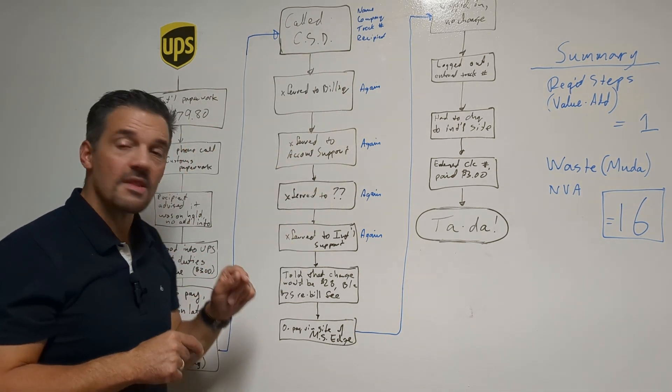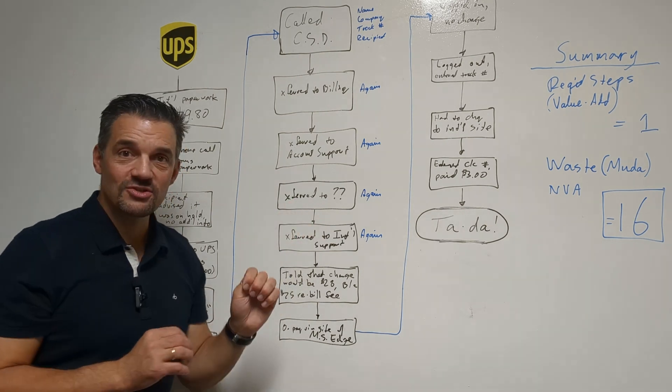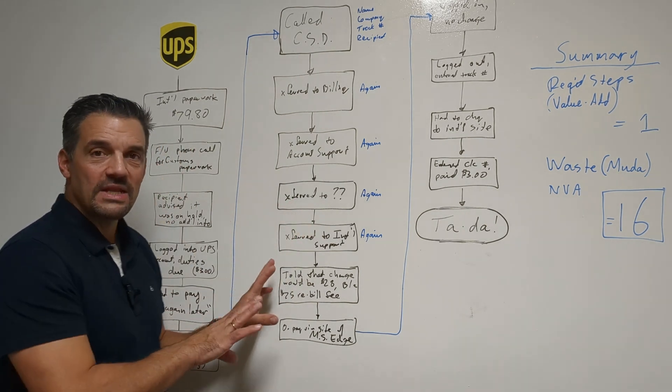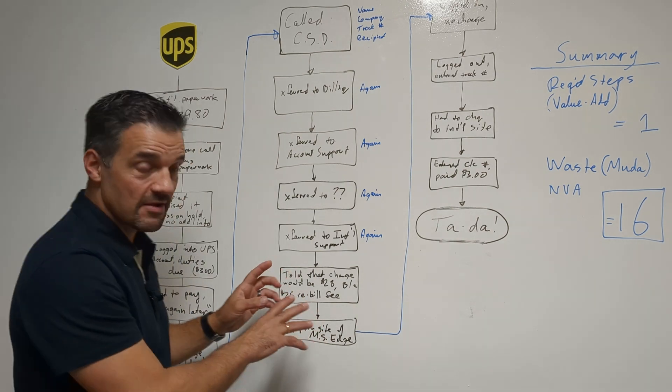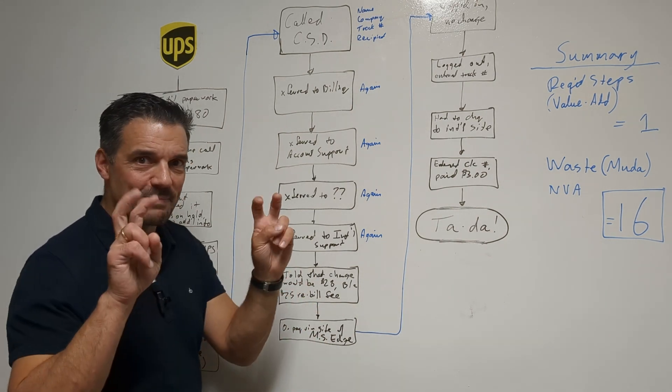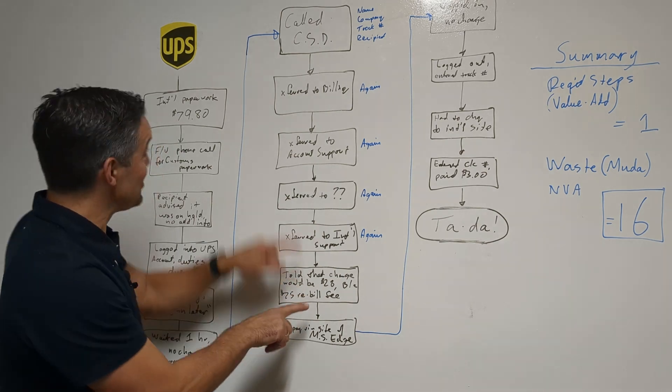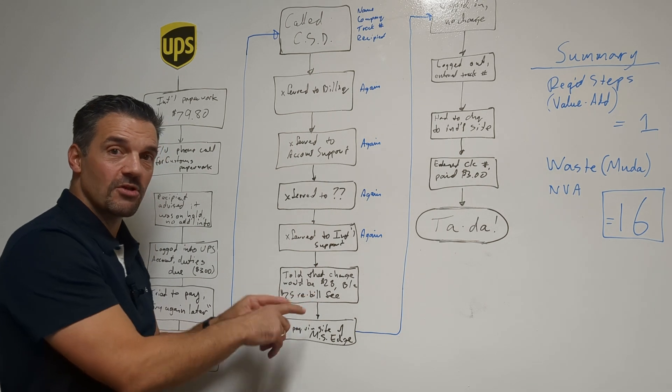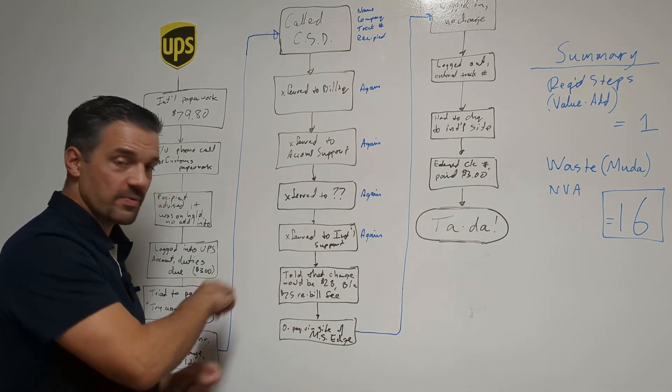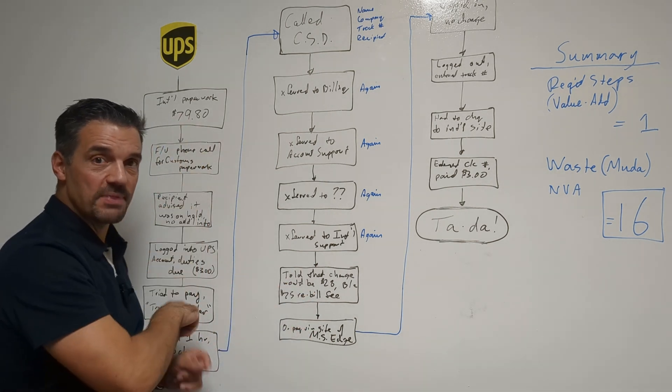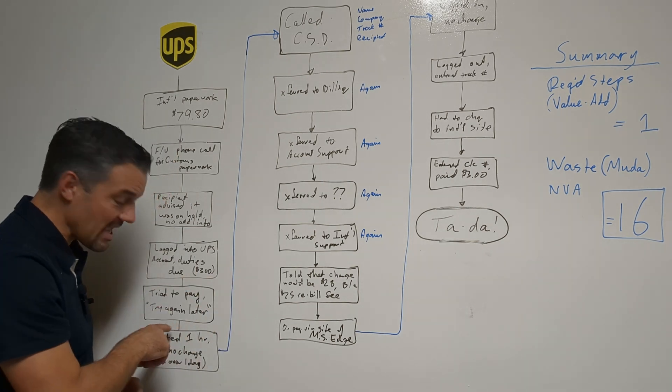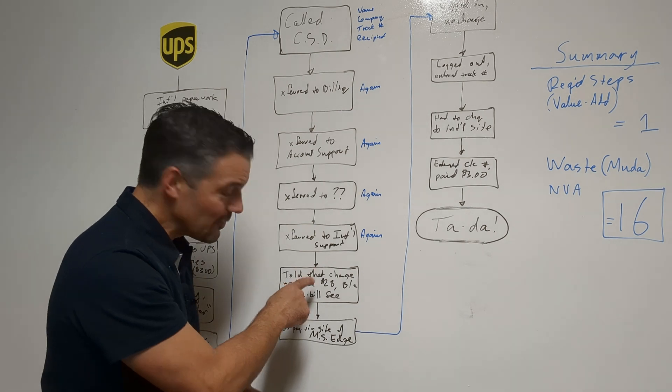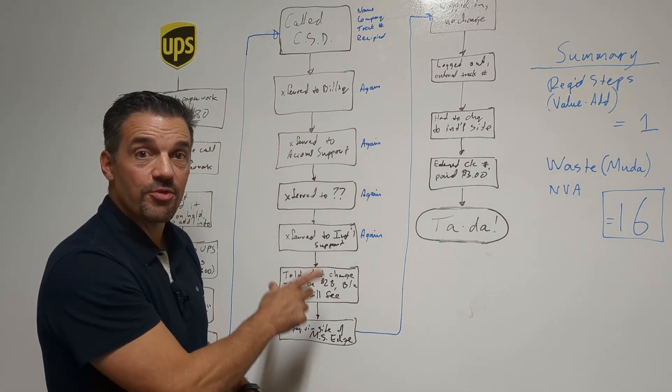Because if you follow along here through all this, then we finally get transferred to international support. International support then tries to handle this and they go 'oh, well now we need to bill you 25 dollars' - because what I'm speculating, they call it a rebilling. What I'm speculating is that UPS recognizes that their system sucks, so they then want to charge 25 dollars to rebill the three dollars which they've never actually ever billed us for.